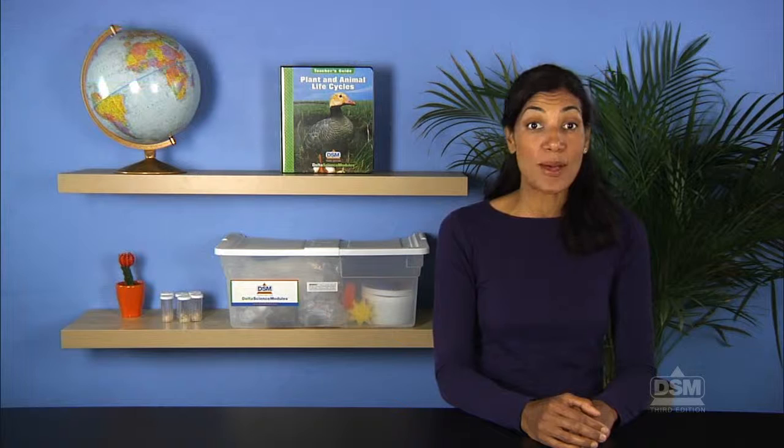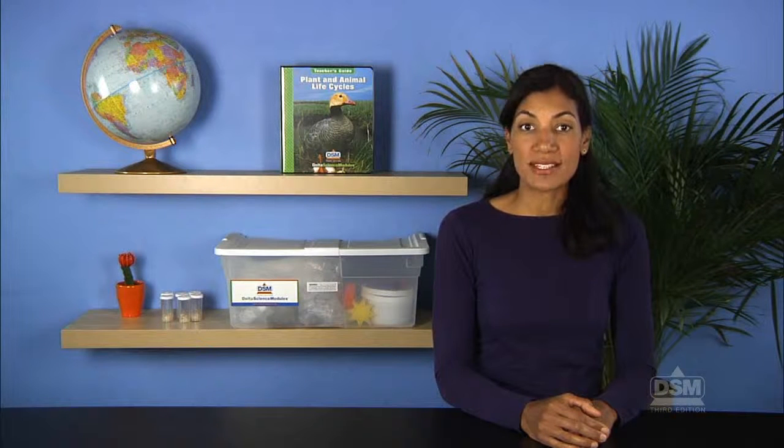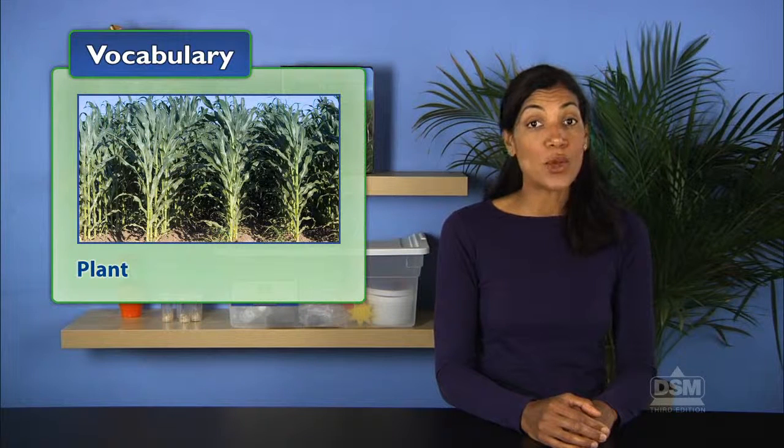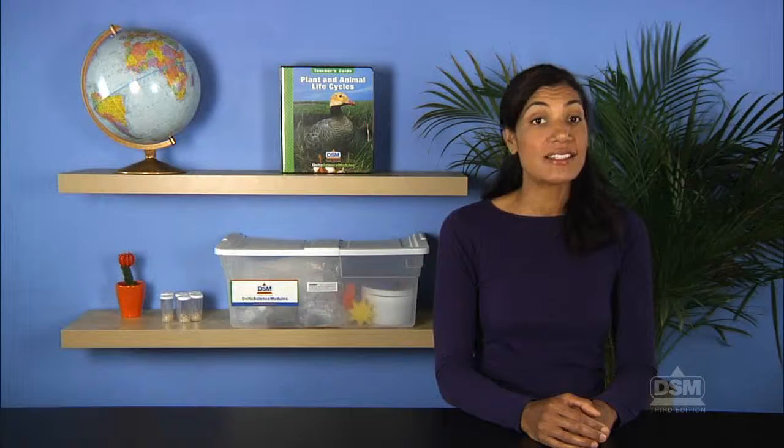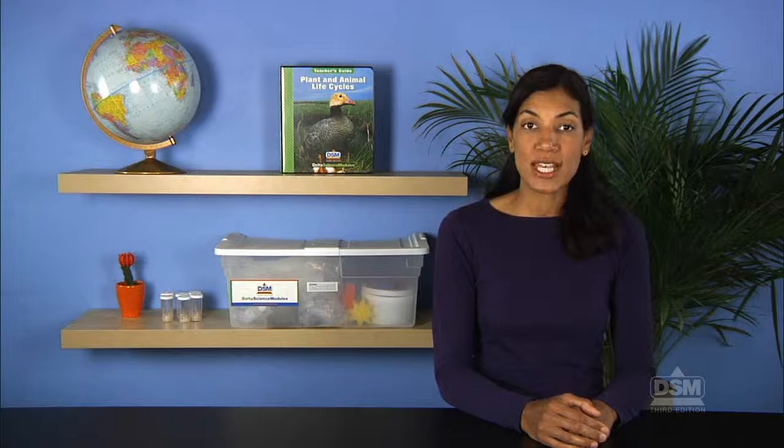Next, encourage students to share what they know about plants and animals. Introduce some characteristics of a plant, such as a plant is a living thing that makes its own food for energy to live and grow, a plant is not able to move from place to place, and a plant has no sensory organs.